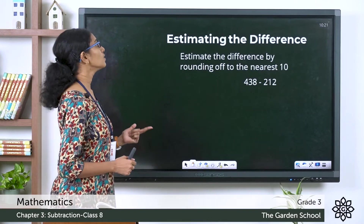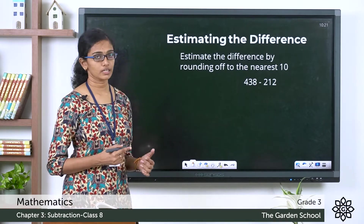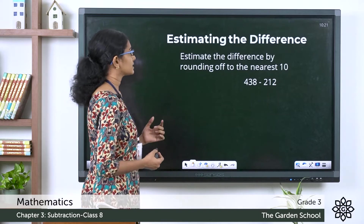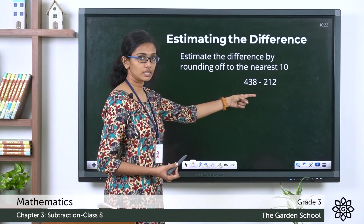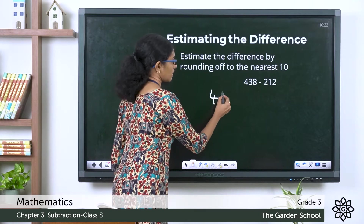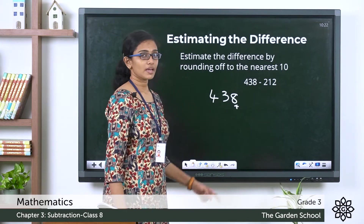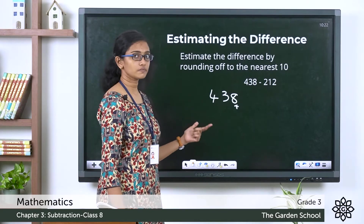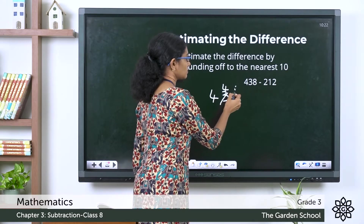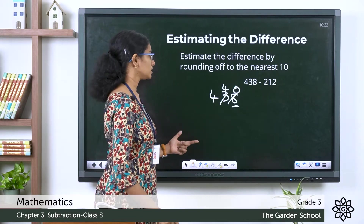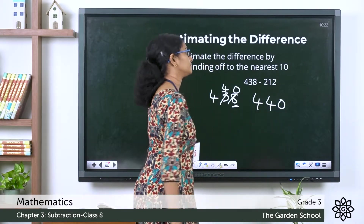The first question: estimate the difference by rounding up to the nearest ten. The question is 438 minus 212. Let's first round off the minuend — 438 is the greater number here. In the ones place we have 8, which is more than 5, so we add one to the rounding digit and make the digits to its right zero. So 438 rounded off to the nearest ten gives us 440.